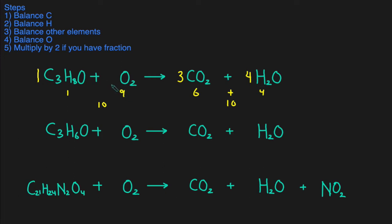So the coefficient for O₂ is nine divided by two — but that gives us a fraction. Per step five, when we have a fraction we multiply all the coefficients by two. One multiplied by two gives us two. Nine over two multiplied by two just gives us nine. Three times two is six, and four times two is eight.